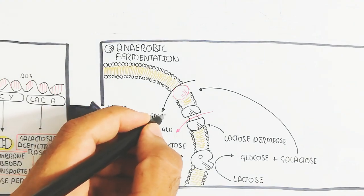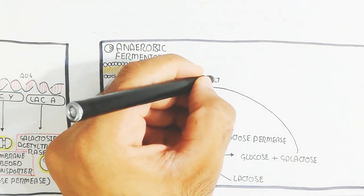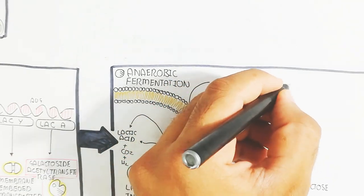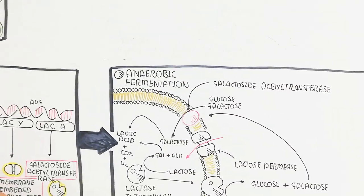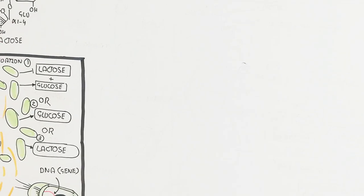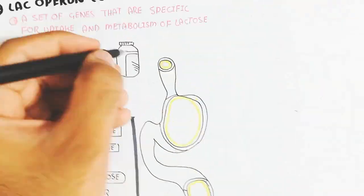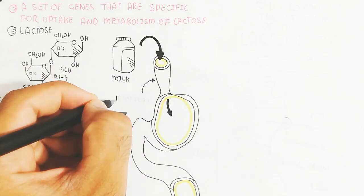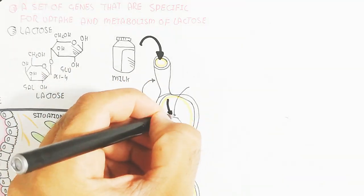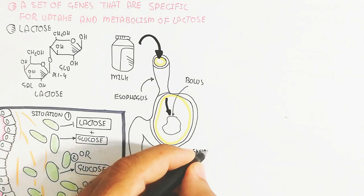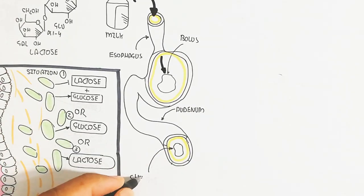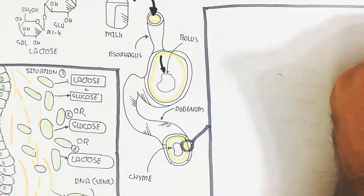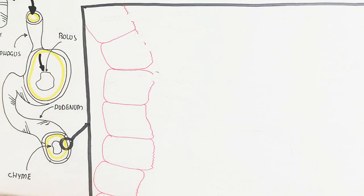Galactose enters the cell via the galactoside acetyltransferase enzyme. Once inside, lactic acid, carbon dioxide, and hydrogen gas are produced — completing the bacterial metabolism of lactose. Bacteria thus produce energy through anaerobic fermentation. Now let's understand lactose intolerance: milk passes through the esophagus as a bolus, into the stomach as chyme, and then into the duodenum.